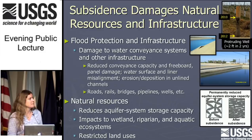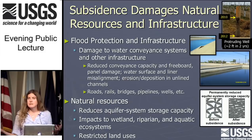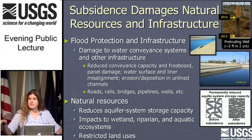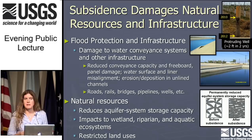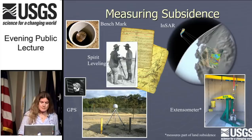The other side of subsidence impacts are natural resources. I've already explained the reduced aquifer system storage capacity. But when the topography is changing, you find wetlands and rivers in the lowest places of the landscape. As those lower areas change, you might have spaces now lower than where a river is. So rivers may change course — they may migrate. Wetlands may disappear and new ones emerge in new places.